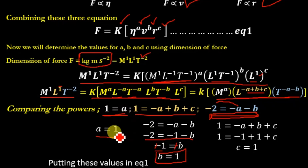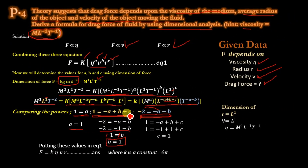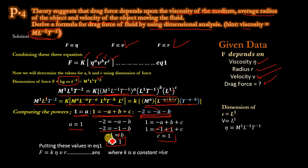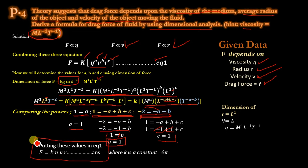With A = 1 and B = 1, substituting into the length equation: 1 = −1 + 1 + C. The −1 and +1 cancel, giving C = 1. Putting the values A = B = C = 1 into the original equation gives F = K · η · V · R. This is the drag force formula derived by dimensional analysis, where K = 6π.